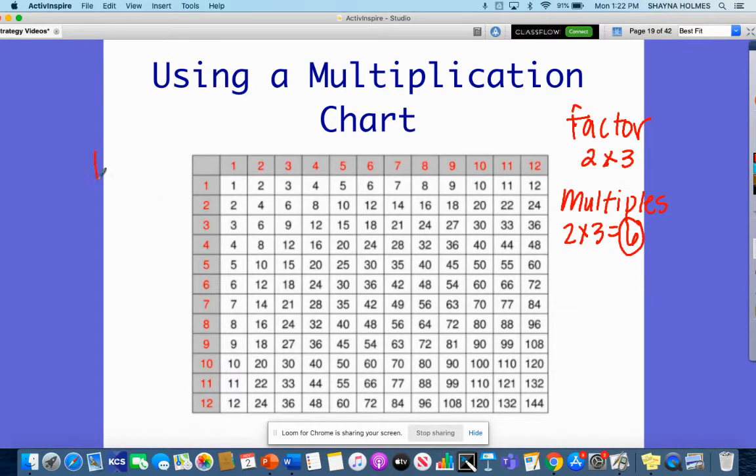A prime number is a number whose only factor pair is itself and one. I'm going to use three for example. Three times one is three, and one times three is three. Three is a prime number because the only thing that I can multiply to get three is three itself and one.